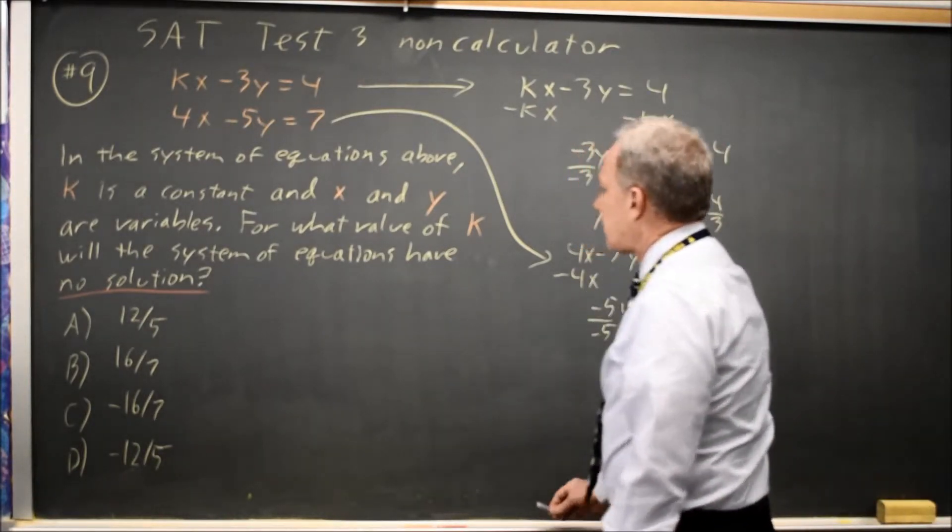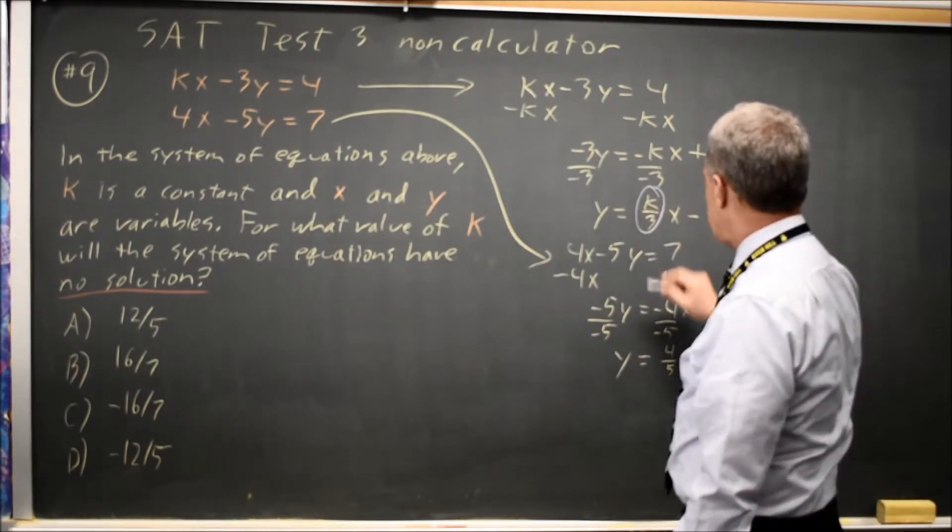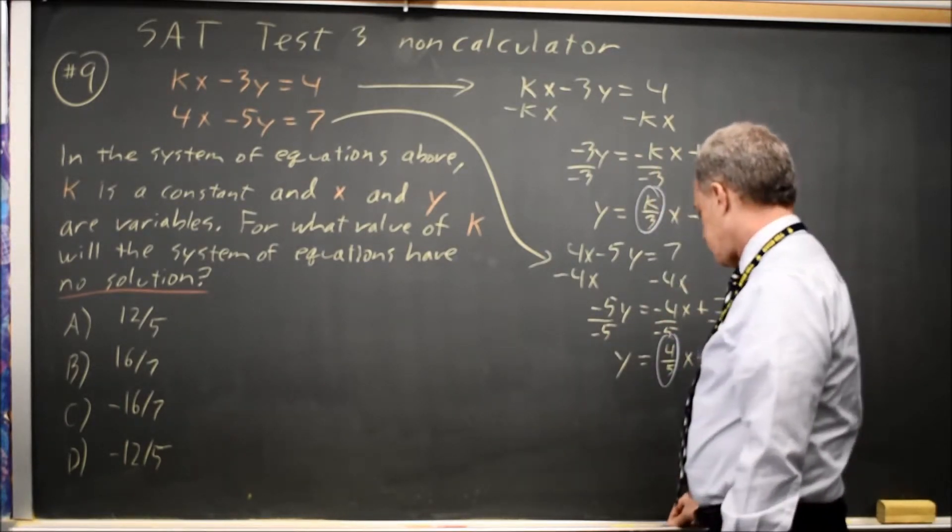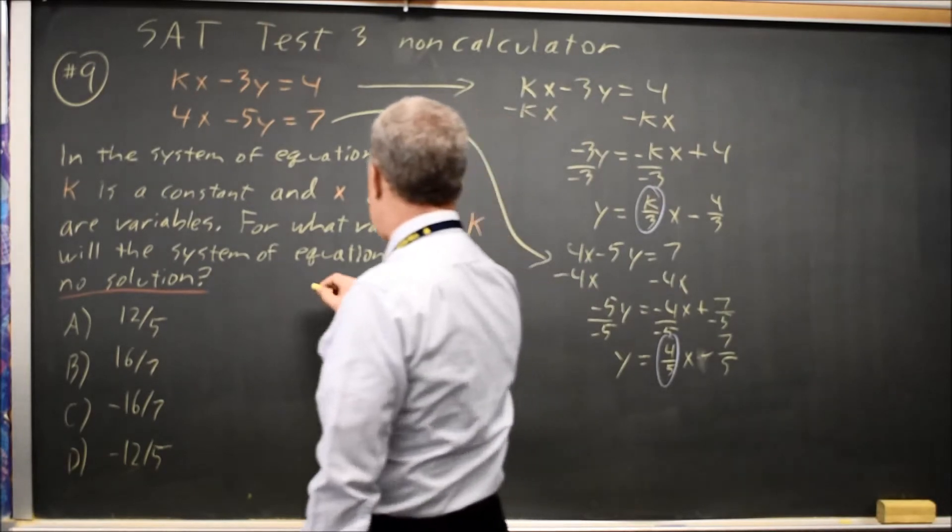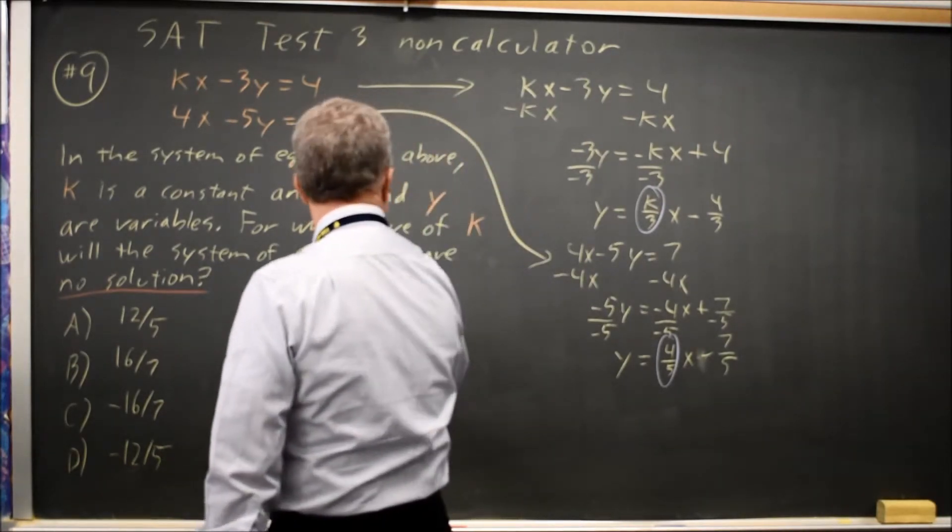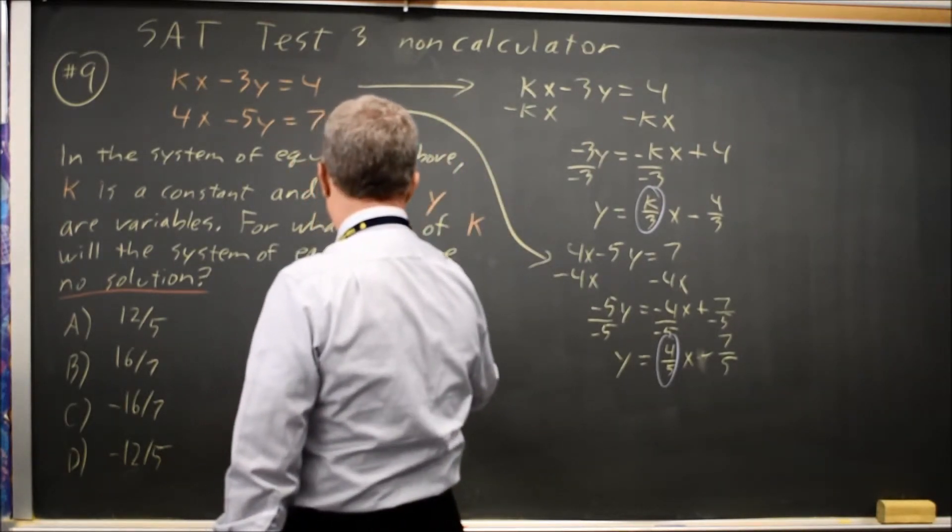That gives us k over 3 equals 4 over 5. I could cross multiply and then divide by 5.